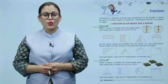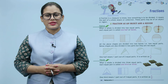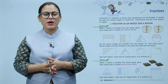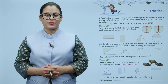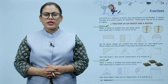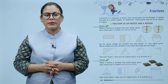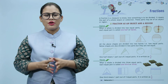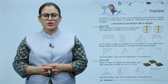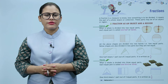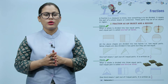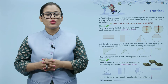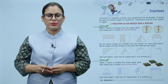A fraction is a measure to know how something is to be divided. It means the part of a whole object or collection. These parts may be of an object or region. Fraction means that a whole is divided into two equal parts; each equal part is called one half or halves. All the above shapes are divided into two halves, that is, two equal parts.